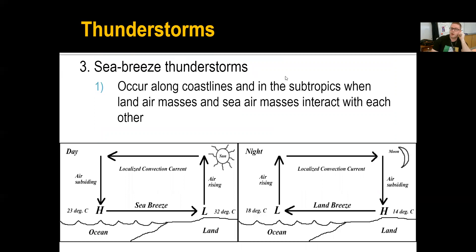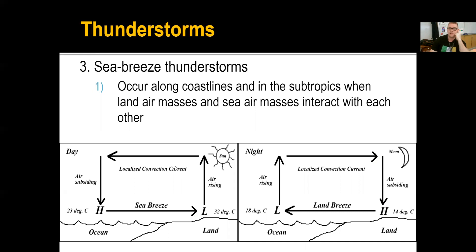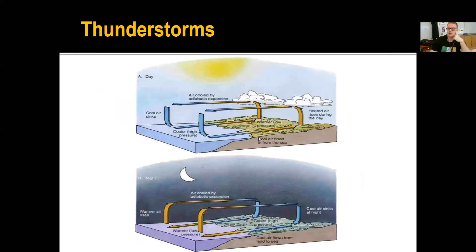The next type is sea breeze thunderstorms. If you are by the coast, we alternate between having a land breeze and a sea breeze depending on the time of day. During daytime, we have a sea breeze where air moves from the ocean onto the land. At nighttime, it shifts back from the land into the ocean. We're heating the land during the day, creating an area of low pressure where warm air rises. At nighttime, the land cools, air sinks. We're essentially reversing convection along coastlines. It's this shift between daytime and nighttime that produces sea breeze thunderstorms.